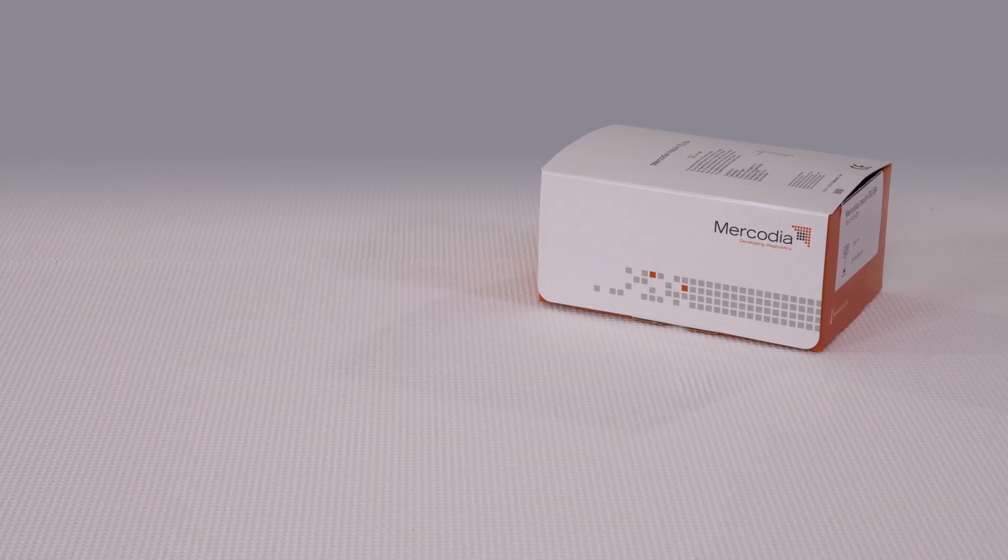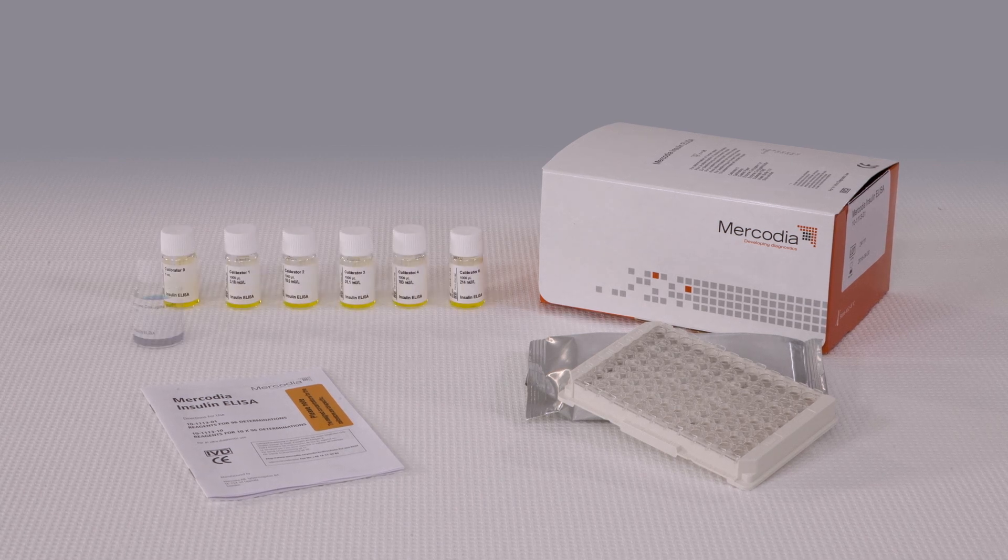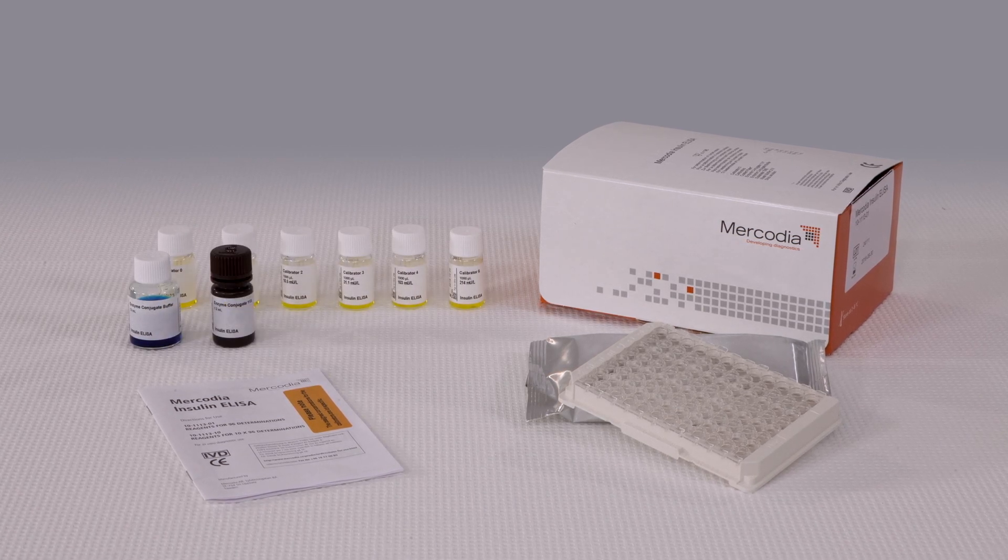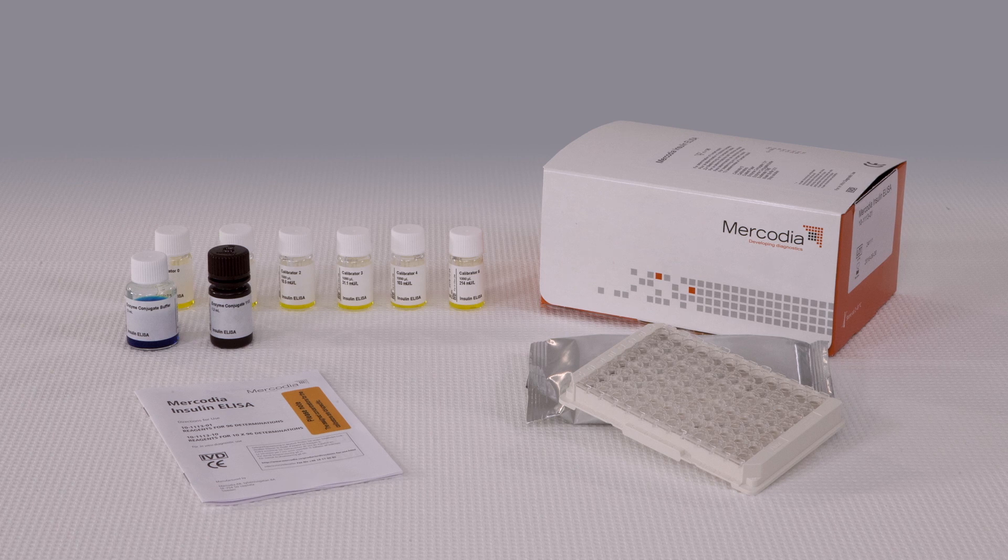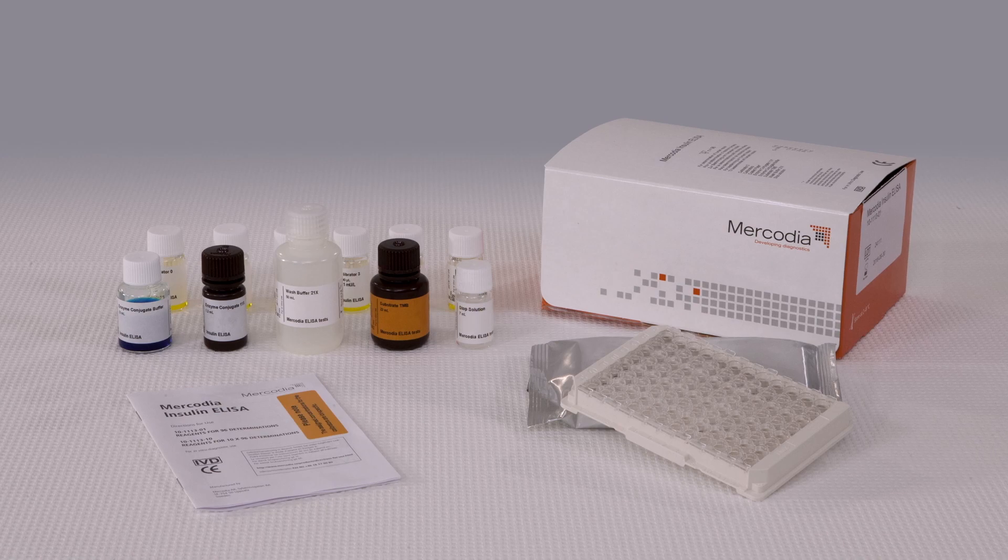In the ELISA box, you will find a 96 well-coated plate, calibrators, enzyme conjugate buffer, enzyme conjugate 11X, wash buffer 21X, substrate TMB, and stop solution.